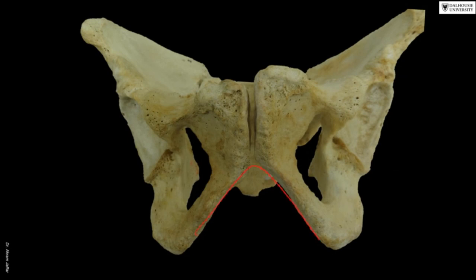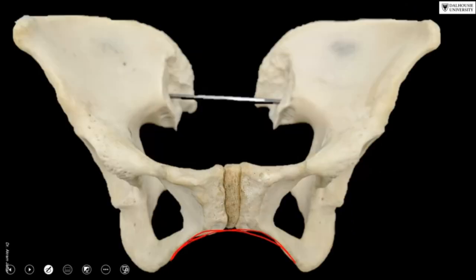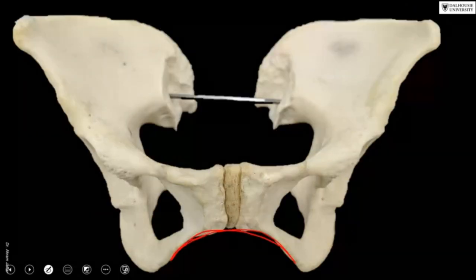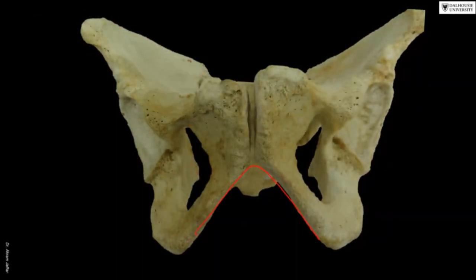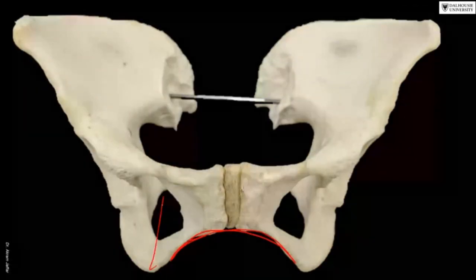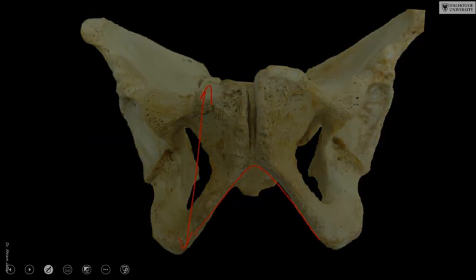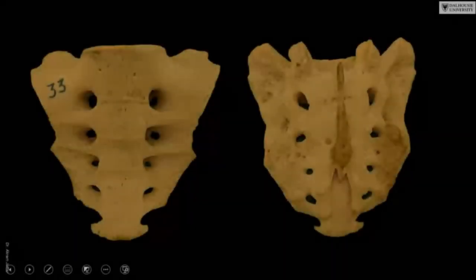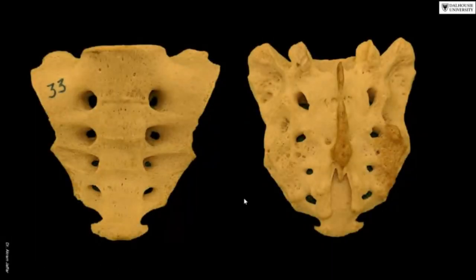In the male pelvis the bone markings look rougher and it is deeper — much deeper from here to here compared to the female pelvis — and it is narrower.